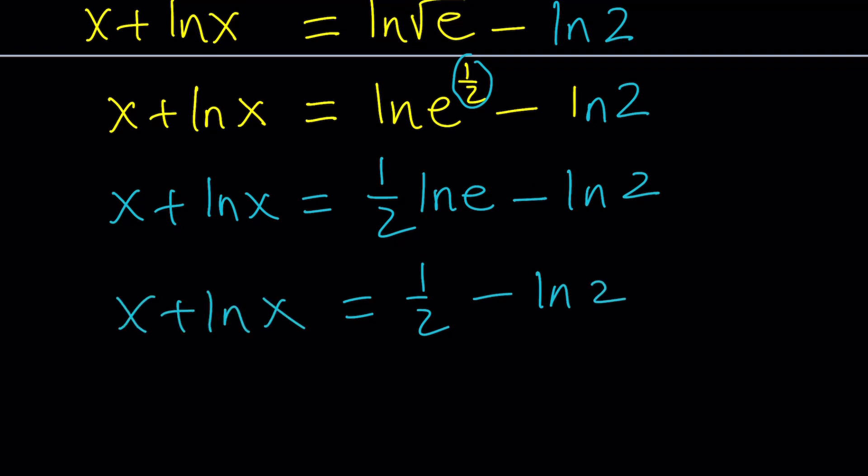We're almost there except for the plus minus difference. So how do you turn that minus sign into a plus sign? That can be done easily by considering the following. We can write that as one-half plus negative one times ln 2.